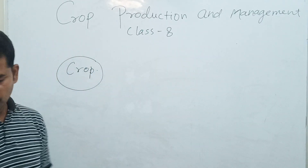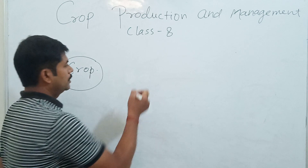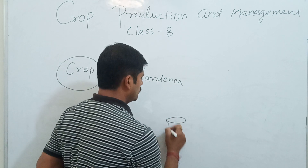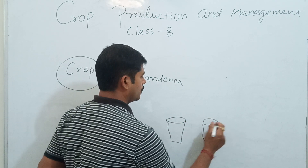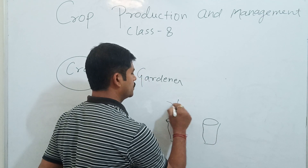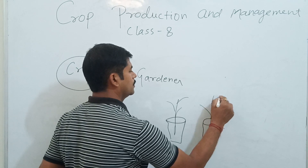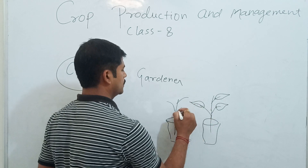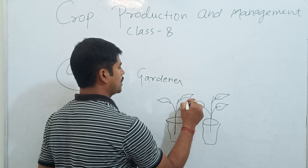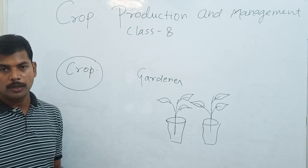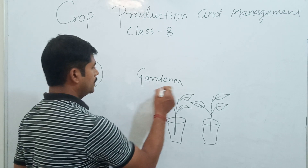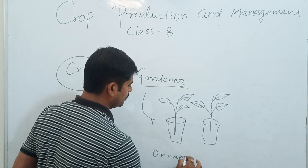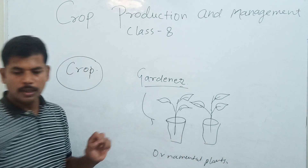At your home, the gardener is just using one or two pots to produce different types of plants. But this is not called a crop. The gardener uses those for ornamental plants — growing ornamental plants in a garden setting.